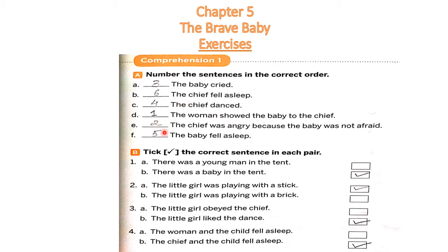Number B: take the correct sentence in each pair. In each number, four pairs are given and one sentence in each pair is correct. Number one: 'There was a young man in the tent' or 'there was a baby in the tent' — the correct answer is: there was a baby in the tent. Number two: 'the little girl was playing with a stick' or 'the baby girl was playing with a brick.'